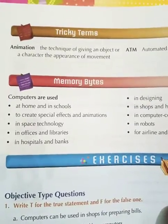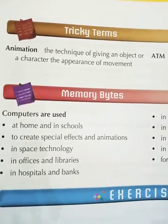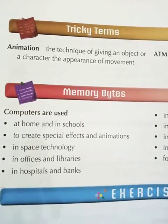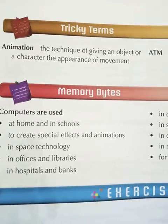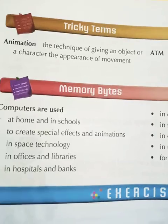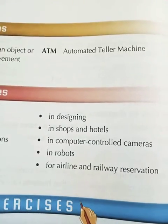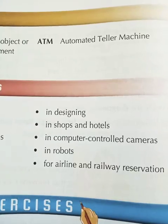Turn to page number six. We have tricky terms. The first term is animation. Animation is the technique of giving an object or a character the appearance of movement. We have studied animated movies — the technique used to make characters appear to move is called animation. The second term is ATM. What is the full form? Automated Teller Machine. We call it ATM but you have to learn the full form.